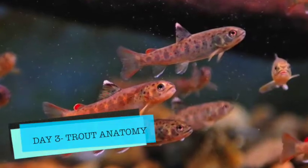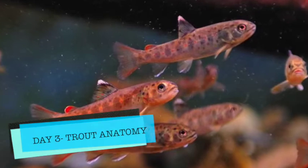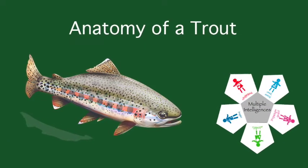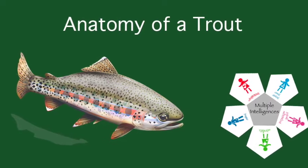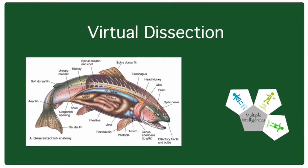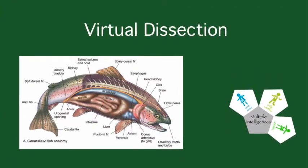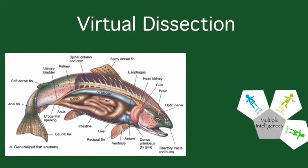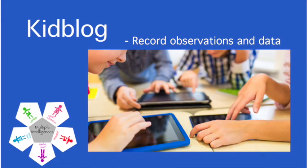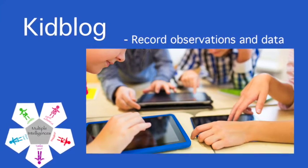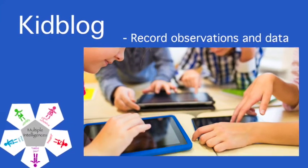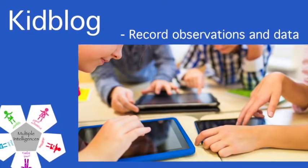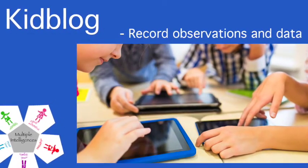Day three focuses on trout anatomy. The day will start with an introduction to the anatomy of a trout, covering terminology and the location of essential body parts. Students will then participate in a virtual dissection designed to observe how living things are similar to and different from each other. Recording observations and reflections on the dissection will be recorded in their ongoing KidBlog. At this stage, some of the alevin are starting to swim around the tank as they progress to the fry stage.